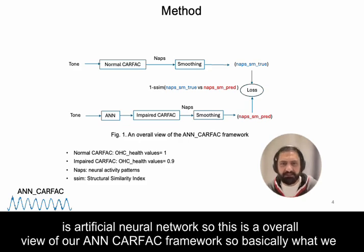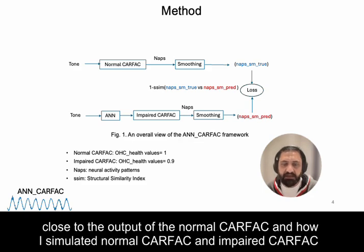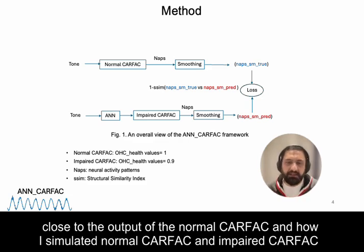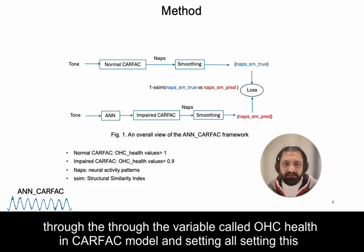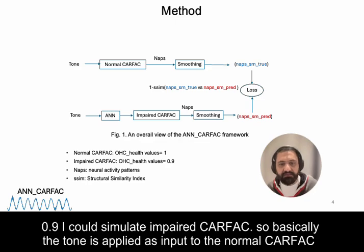Basically, what we are trying to do is make the output of the impaired CARFAC as close as possible to the output of the normal CARFAC. I simulated the normal and impaired CARFAC through a variable called OHC health in the CARFAC model. Setting this variable to 1 for all channels simulates a normal CARFAC, and setting it to 0.9 simulates an impaired CARFAC.